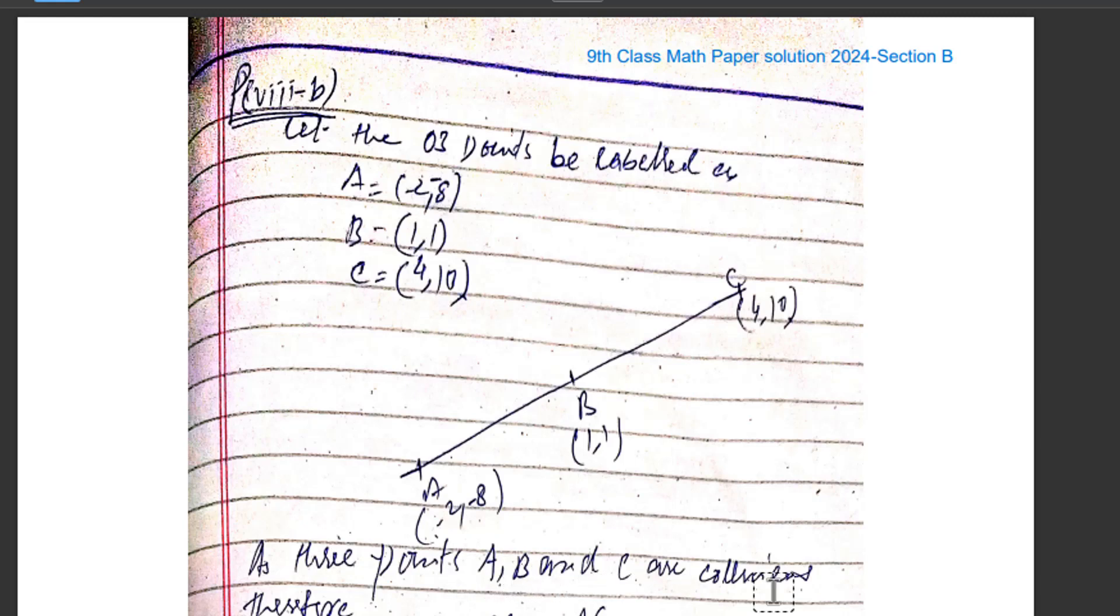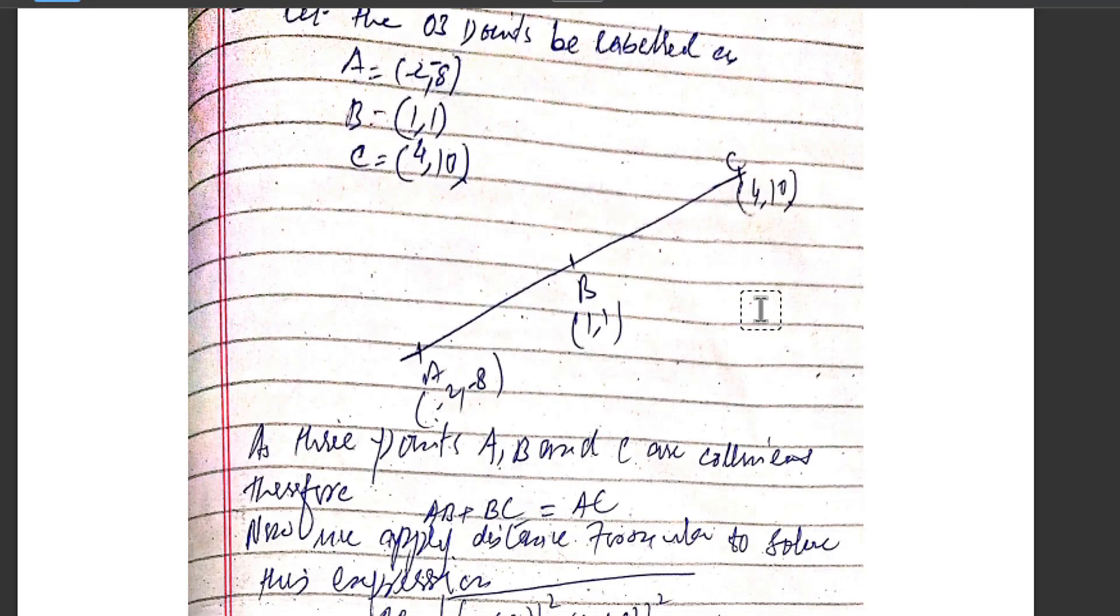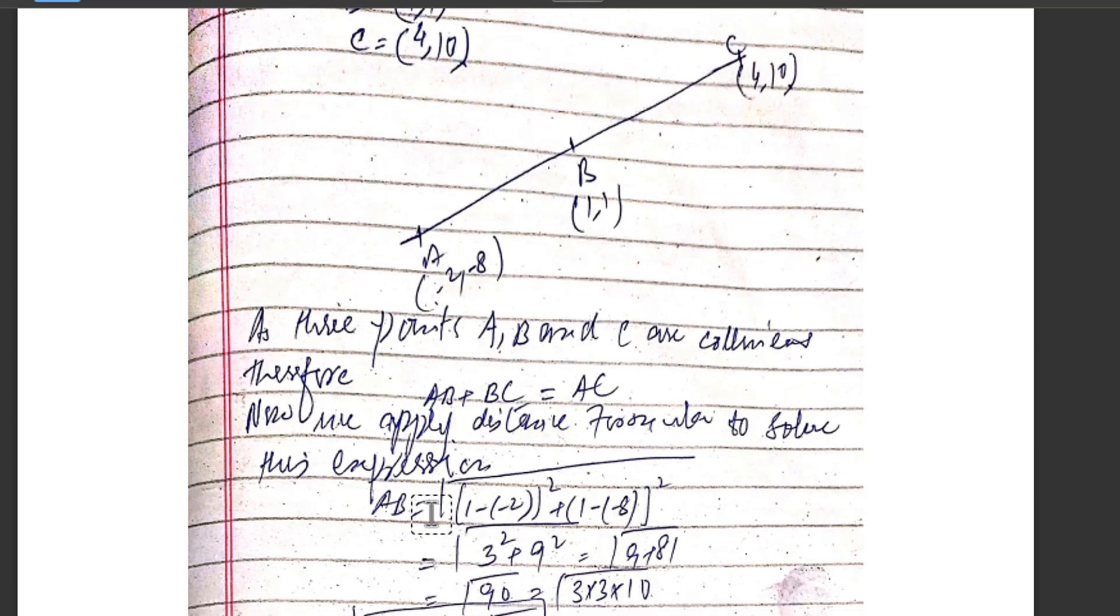As three points A, B, and C are collinear, it means all three points will be on the same line. Therefore, we apply the distance formula to solve this expression: AB plus BC equals AC.